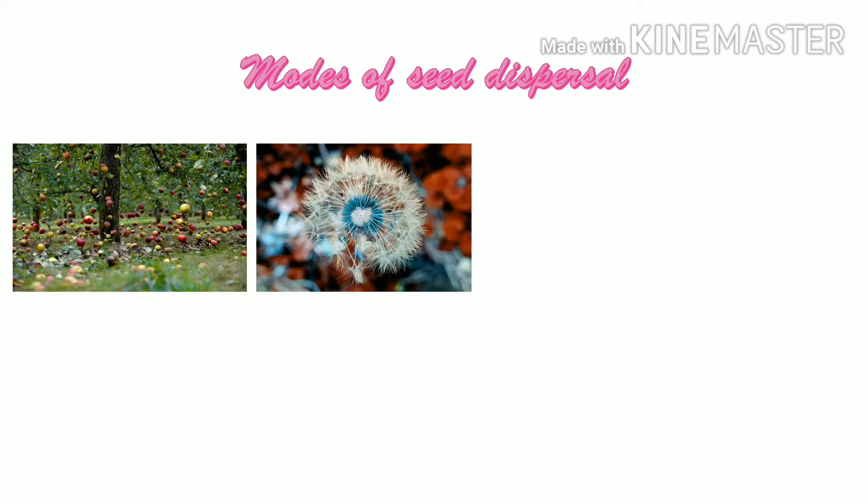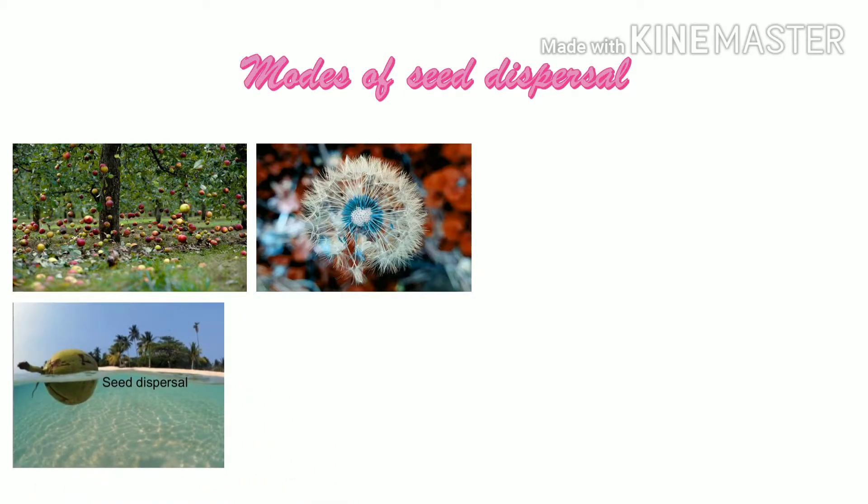Dispersal by wind. Seeds of certain plants are very light and have wing-like structures or hair on them. These seeds are easily carried away by the wind from one place to another. Examples are maple and dandelion seeds.